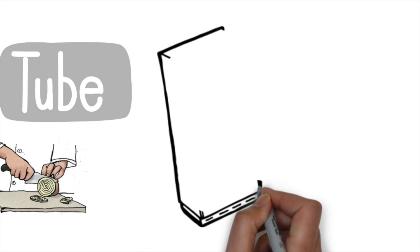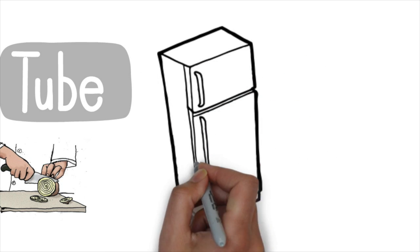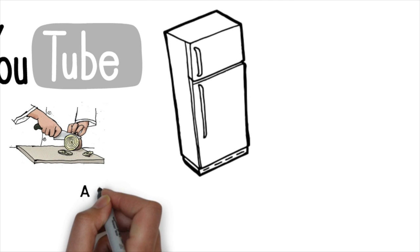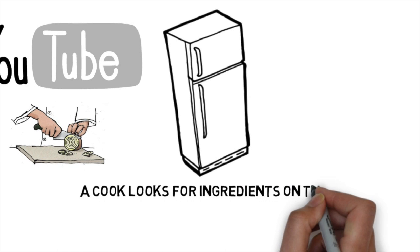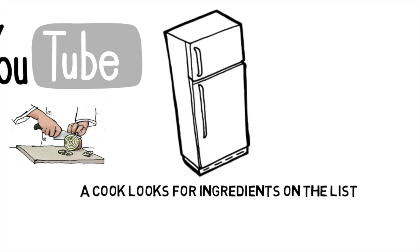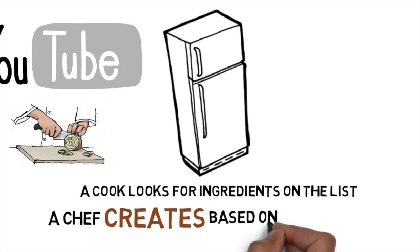While looking in the refrigerator, Homer Simpson has been known to say, there is no food, just ingredients to make food. The cook opens the refrigerator looking for the items on their recipes list. The chef opens the refrigerator and creates recipes based on what's there.